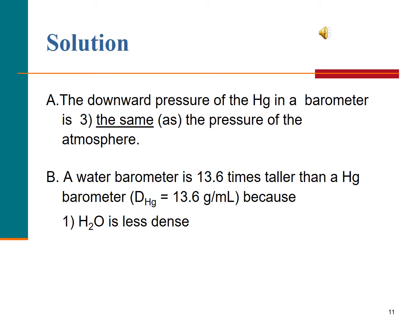One of the big reasons mercury is used to make barometers is because it's a lot more dense than water. Water has a density of one gram per milliliter. Because mercury is so dense, it responds much more dramatically to changes in pressure than water does. A water barometer would have to be approximately 32 feet tall to get the same effect as a mercury barometer.